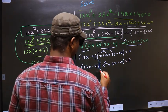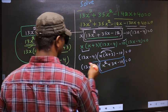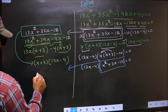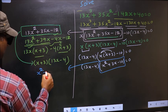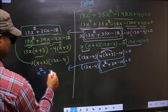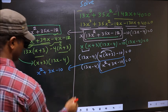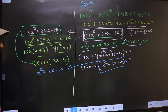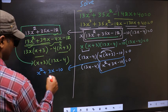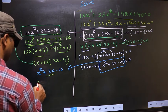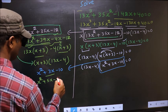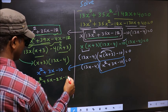Now we got a quadratic. I will factorize the quadratic: x² + 3x - 10. To factorize this, we should split the middle term +3x. In place of +3x, I write +5x - 2x - 10.